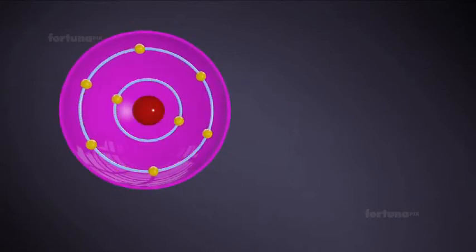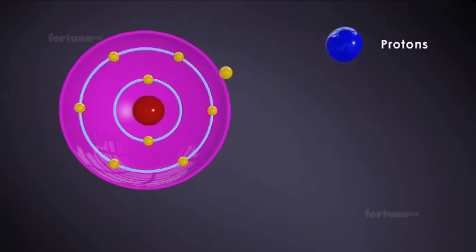If we look inside an atom, we would see three types of tiny particles: protons, electrons, and neutrons.